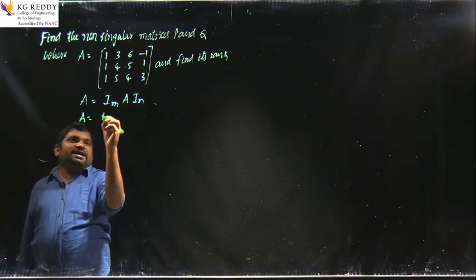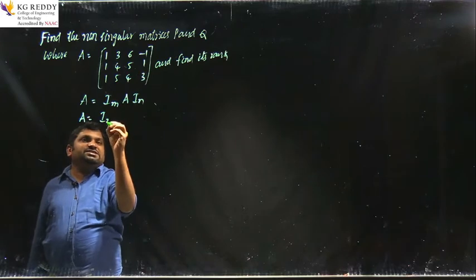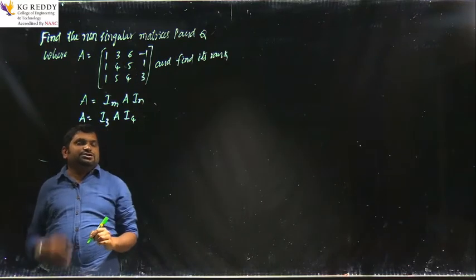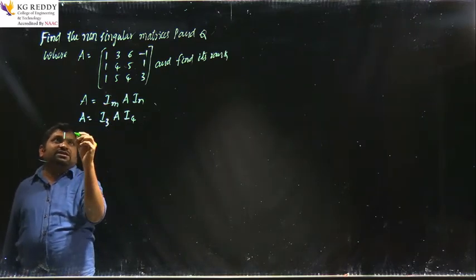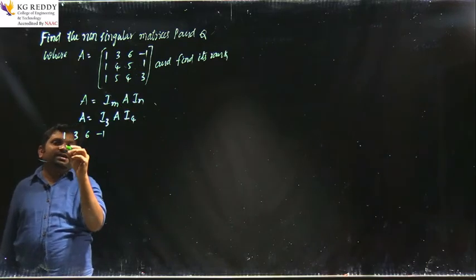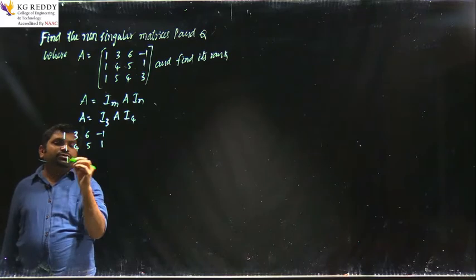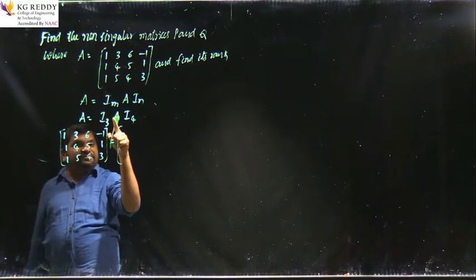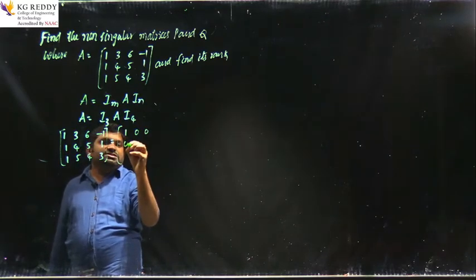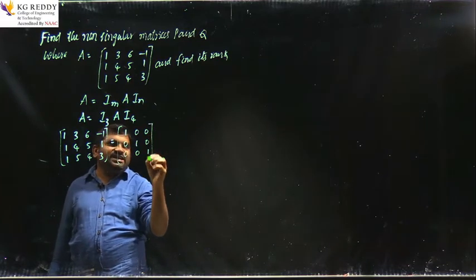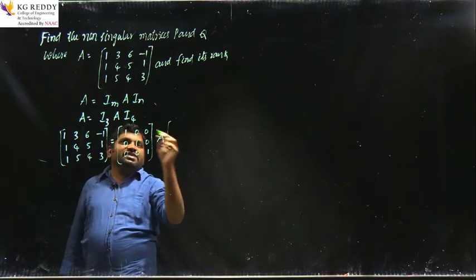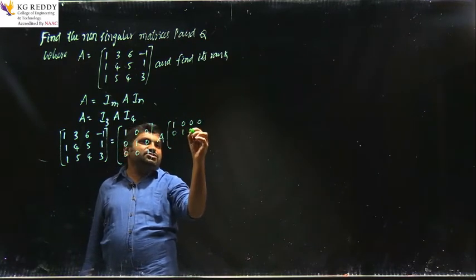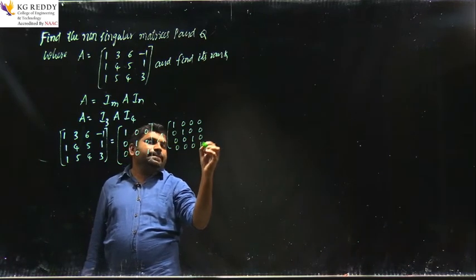Therefore A equals to I_m, where m means how many rows are given. 3 rows are given, so I_3 into A into I_4 — 4 columns are given in the problem. Now write down matrix A equal to the given matrix: first row 1, 3, 6, -1; second row 1, 4, 5, 1; third row 1, 5, 4, 3. This is the left-hand side. On the right side, I_3 is the identity matrix of size 3×3 — that is 1,0,0 / 0,1,0 / 0,0,1 — into A as-is, into I_4, the identity matrix of size 4.